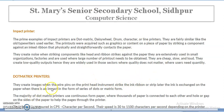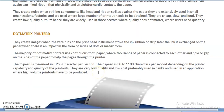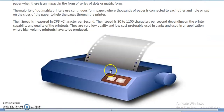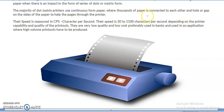The dot matrix printer creates images when wire pins of the print head strike the ink ribbon; the ink is then transferred to the paper as a series of dots in a matrix form. A continuation sheet is used — a roll of paper with holes along the edges for continuous printing. You must have seen this type of printer in banks. The speed of these printers ranges from 30 to 1100 characters per second (CPS).